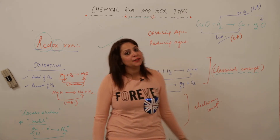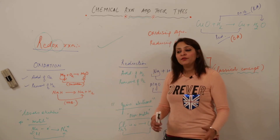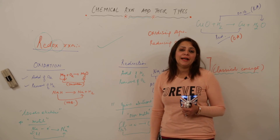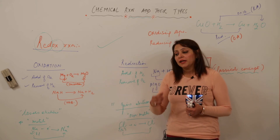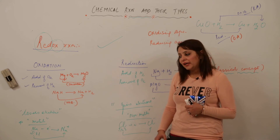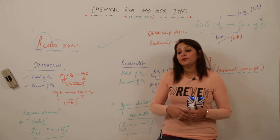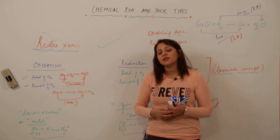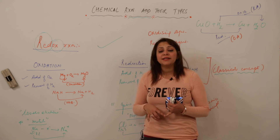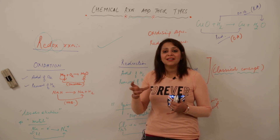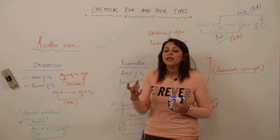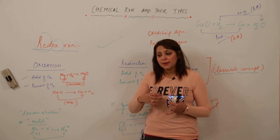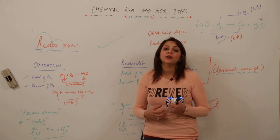There are redox reactions we come across in daily life. Two important examples are: first, corrosion — the eating away of a metal article when exposed to atmospheric gases. This is an example of a redox reaction we encounter daily.